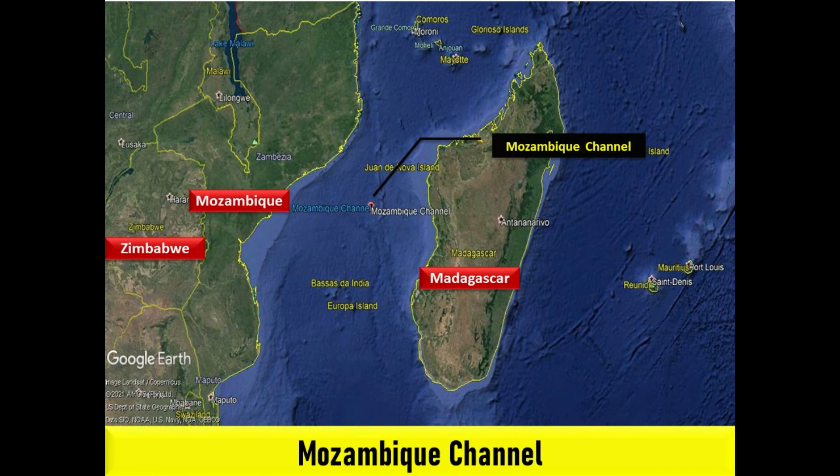The Mozambique Channel is an arm of the Indian Ocean located between the southeast African countries of Madagascar and Mozambique.